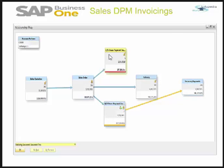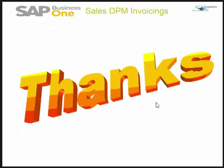There can also be only a single down payment invoice followed directly by an AR invoice, delivery, and incoming payments. Thank you.